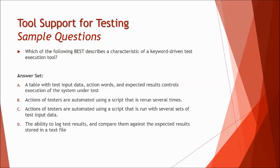The next question: which of the following best describes the characteristics of a keyword-driven test execution tool? If you remember the second tutorial of this chapter, we discussed data-driven testing and keyword-driven testing. Option A: a table with test input data where the action word — a synonym for keyword — and expected result controls execution of the system and the test. Option A is most probably relevant.